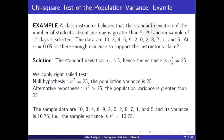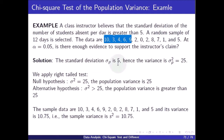A class instructor believes that the standard deviation of the number of students absent per day is greater than 5. A random sample of 12 days is selected. The data are 10, 3, 4, 6, 9, and so on. At alpha equal to 0.05, is there enough evidence to support the instructor's claim? The standard deviation sigma p is 5, hence the assumed variance sigma p square equals 25. We apply the right-tail test.